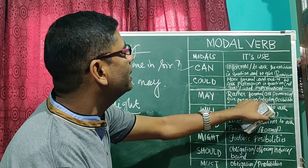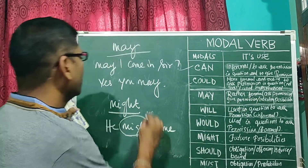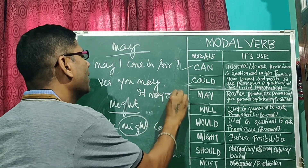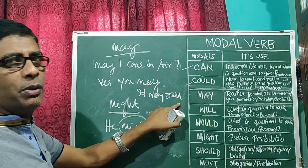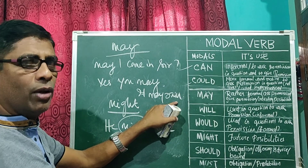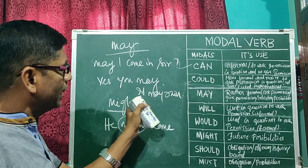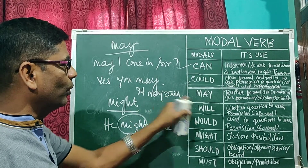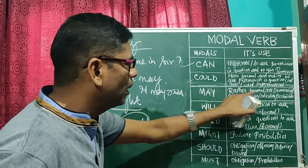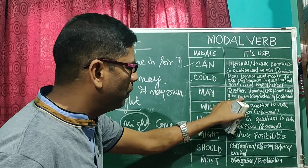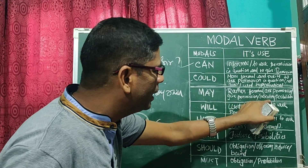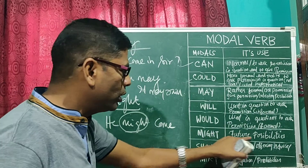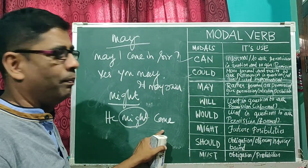May is also used for indicating possibilities. For example: it may rain. There is no rain right now, but it indicates possibility. So may is rather formal — to ask permission and to give permission, and also for indicating possibilities. Might is for future possibilities, as in: he might come.